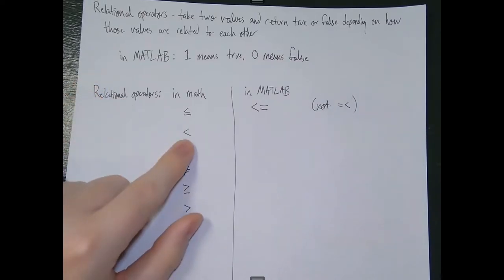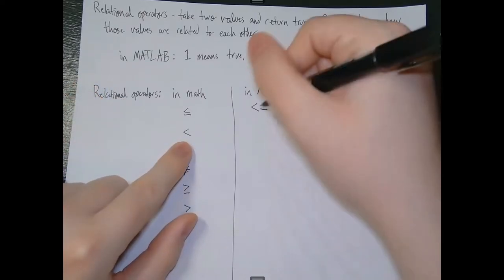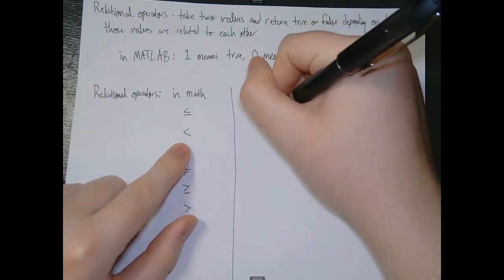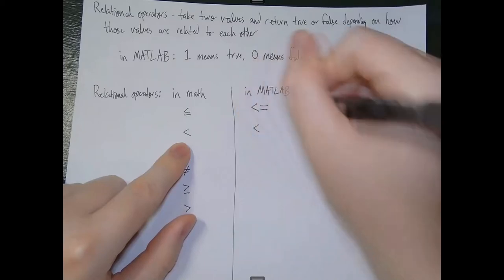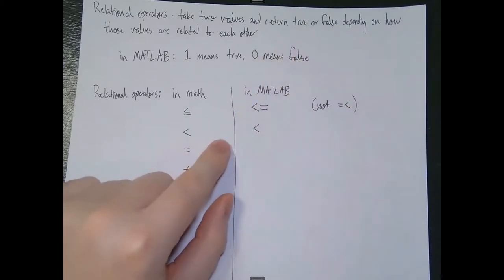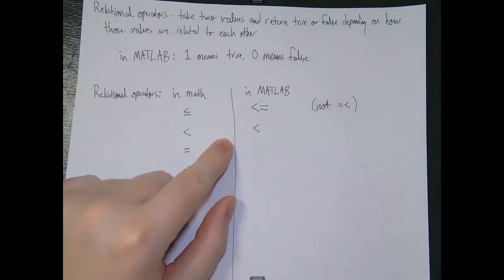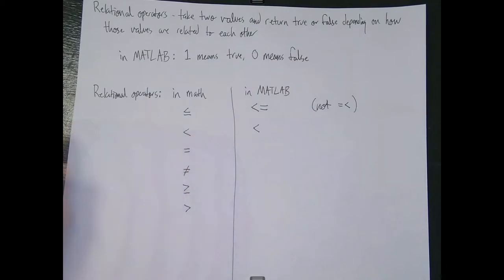Less than or equal to can be written in MATLAB using the less than sign followed by the equal sign — just like that. Note that you can't use equal to or less than reversed; you want less than or equal to. Less than is the same in MATLAB since you have that less than sign. For US American keyboards, the less than sign is above the comma and greater than is above the period.